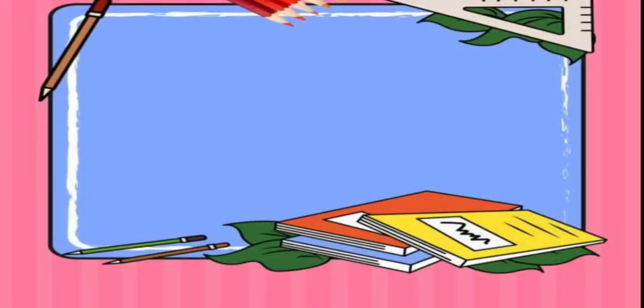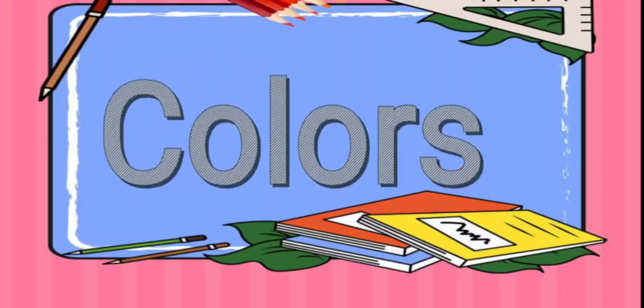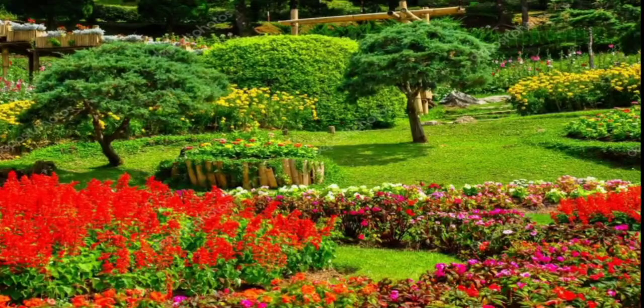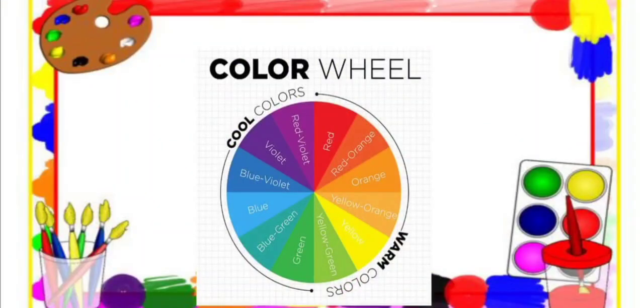Now that we can differentiate geometrical from organic shapes, let's move to colors. Colors add interesting mood and life to an artwork and to the surroundings. The color wheel is a chart showing the primary, secondary, and tertiary colors and how they are related to one another.